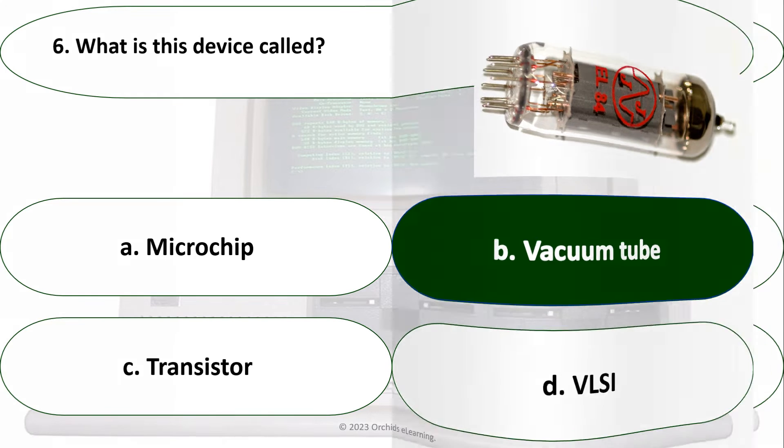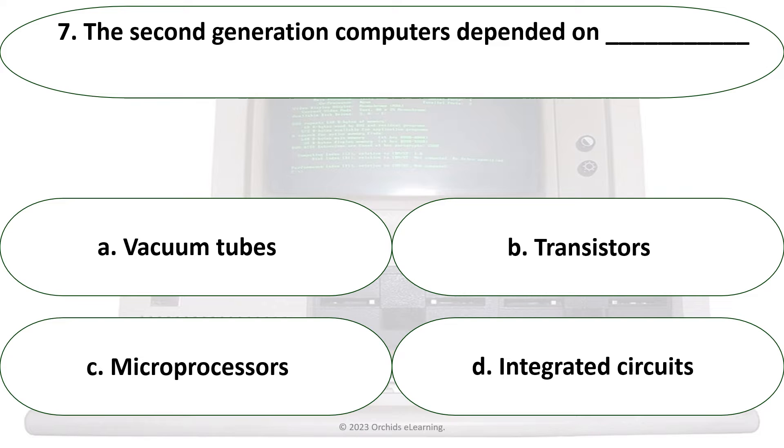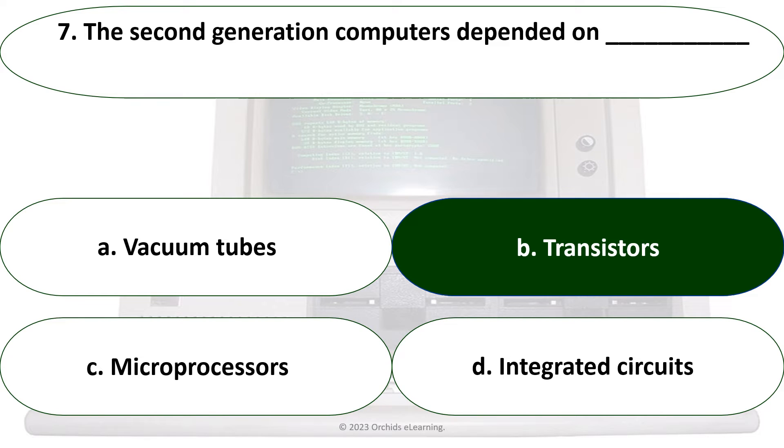The second generation computers depended on: B. Transistors